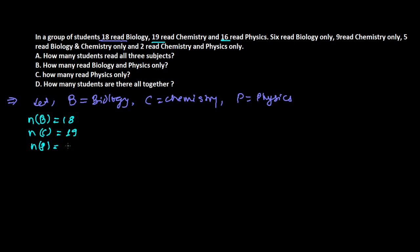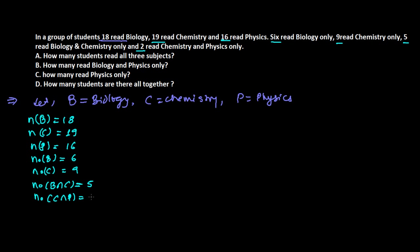Six students read biology only — that means not chemistry and not physics. Nine students read chemistry only. Five students read biology and chemistry only. Two students read chemistry and physics only — just those two subjects. Now we need to represent this information in the Venn diagram.